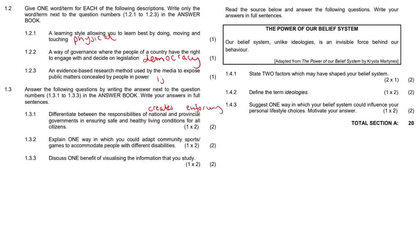1.3.2: explain one way in which you could adapt community sports or games to accommodate people with different disabilities — mental and physical. You could pair people with disabilities with abled people and constantly rotate such teams. The worst thing you could do is treat someone with a disability differently — whether it's autism, an amputation, or any other disability, there's no reason for alternative treatment. Treat them exactly the same, but just adapt.